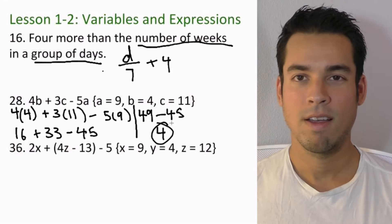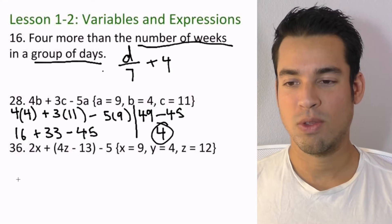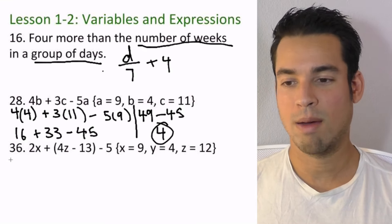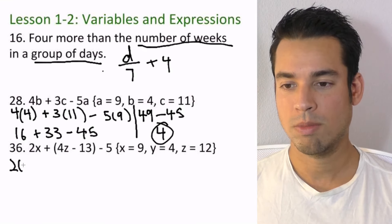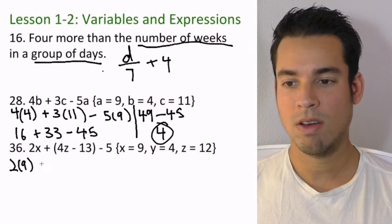All right, let's move on to number 36. Same thing, plug and chug, just operate the same way. We got an x value of 9, so I'm going to plug that in right there, just swap it out, plus.